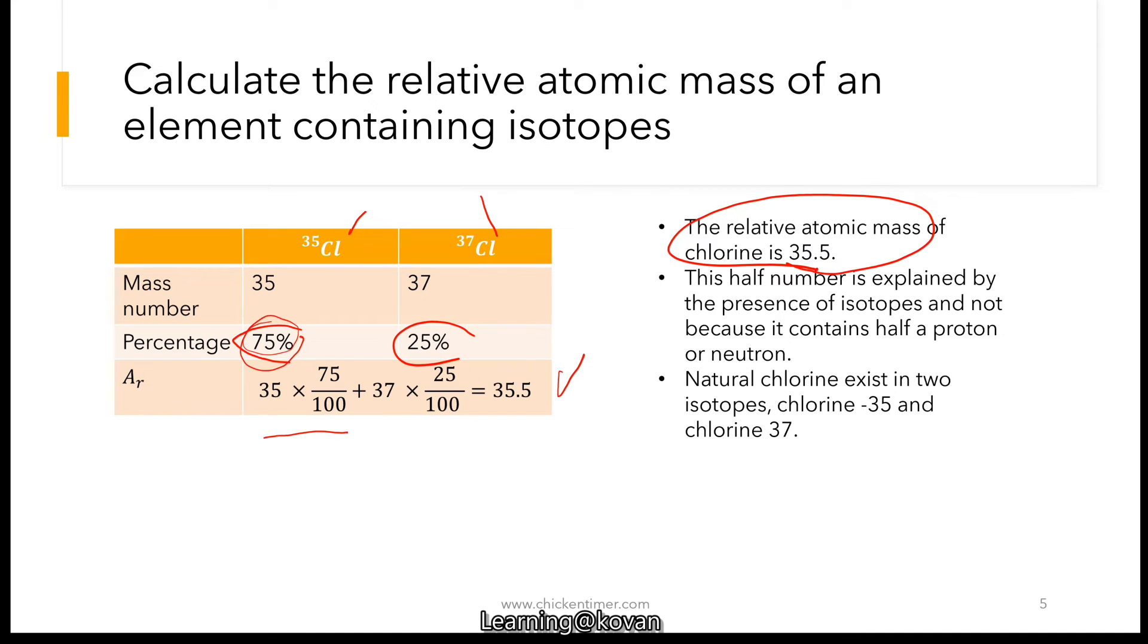And this half here, this 0.5, does not mean that there is half a proton or neutron. It simply just means that there is a presence of isotopes.